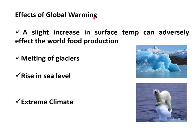Global warming has several negative effects. A slight increase in surface temperature will have a negative effect on food production. The second problem is glaciers melting — if temperature rises, glaciers melt, leading to sea level rise. The third problem is extreme climate events.